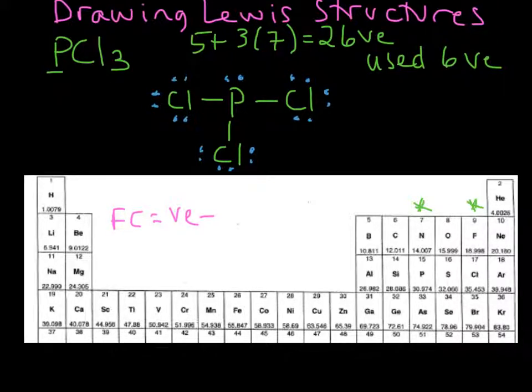You calculate formal charge by taking the number of valence electrons, so we get that from the periodic table, minus the number of electrons assigned in the structure. We assign electrons for formal charge by breaking each of the bonds and giving one electron to each atom in the bond.